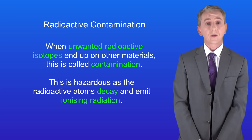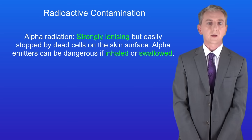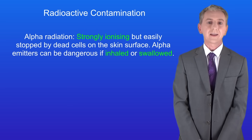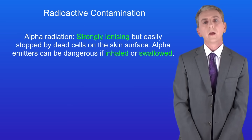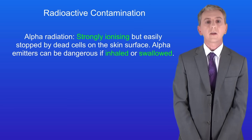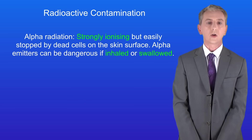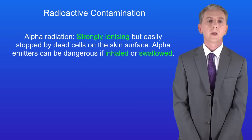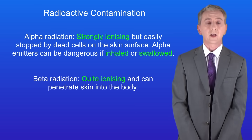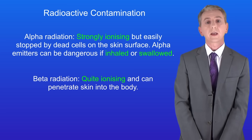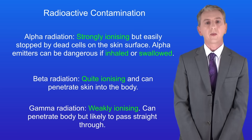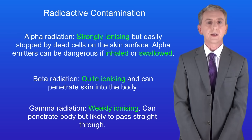The level of hazard depends on the type of radiation emitted. Alpha emitters can be very dangerous as alpha particles are very strongly ionizing. However alpha particles are easily stopped by dead cells on the skin surface. Alpha emitters can be very dangerous if they're inhaled — for example on contaminated dust — or swallowed on contaminated food, where the alpha particles crash into living cells and damage their DNA. Beta particles are less ionizing than alpha, but they can easily penetrate into the body where they can damage cells. Gamma rays are only weakly ionizing and they can pass into the body and then out again, so they're usually less hazardous than alpha or beta radiation.